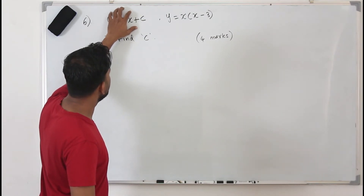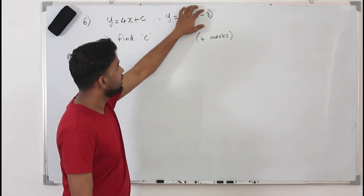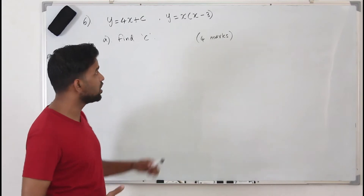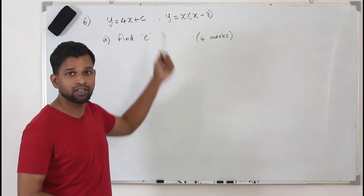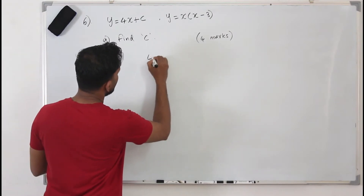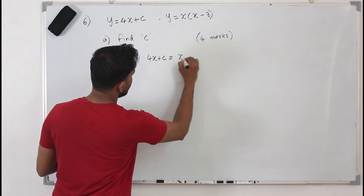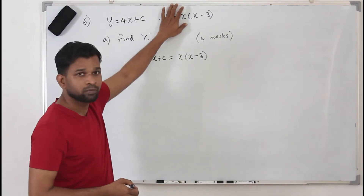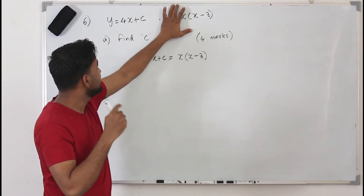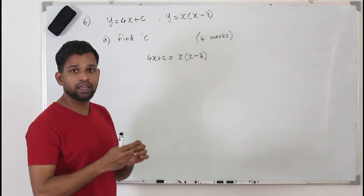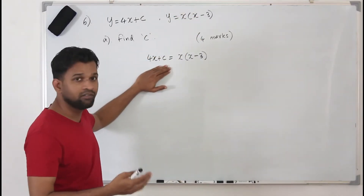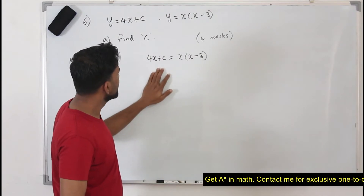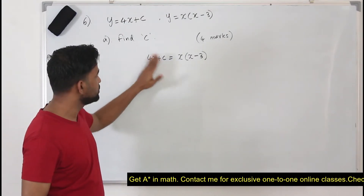When they say a line meets the given curve at only one point, they are talking about the point of intersection. To find the point of intersection, we equate them. When we equate them we get 4x plus c equals x into x minus 3, because the point where the line meets the curve lies on both the line and the curve. The x and y coordinates will be the same, so it's a point of intersection.